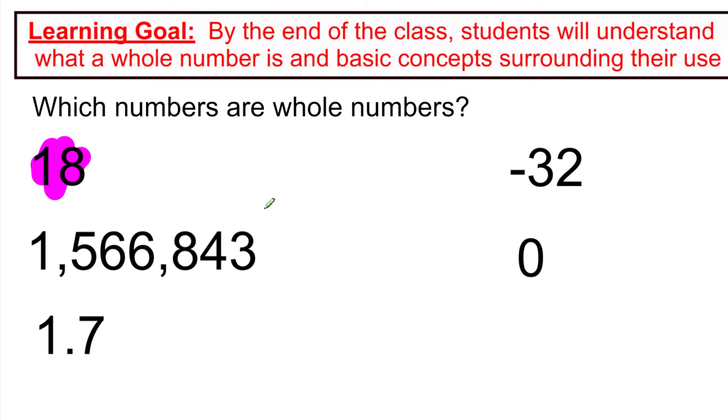Negative 32, not a whole number, it is not a whole number because it is negative, whole numbers are always positive. 1,566,843. Yes, that fits too because it's positive, it doesn't have any decimals or fractions, so we're going to say this one's good.